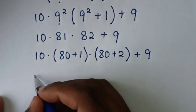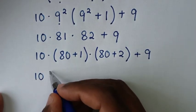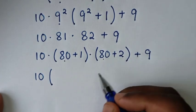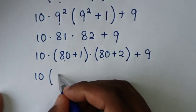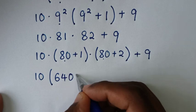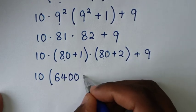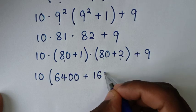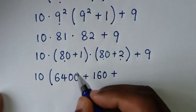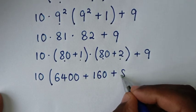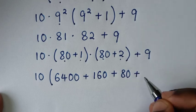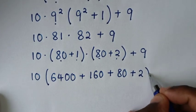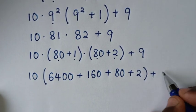Then it will be: 80 times 80 equals 6400. Then plus 80 times 2, which is 160. Then plus 1 times 80, which is 80. Then plus 1 times 2, which is 2. Close bracket. Plus this 9.